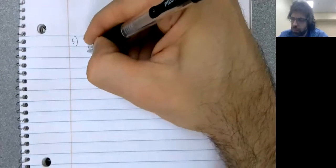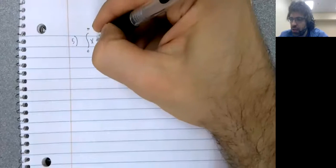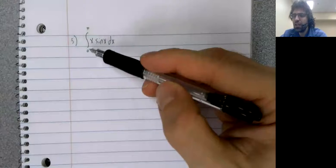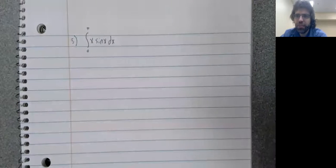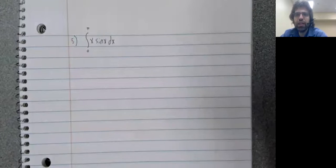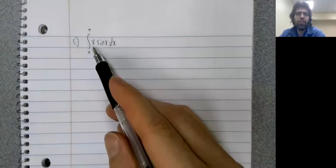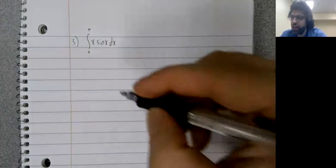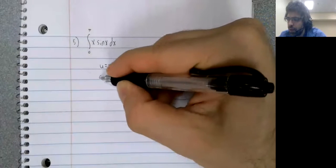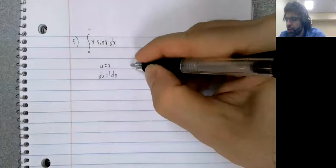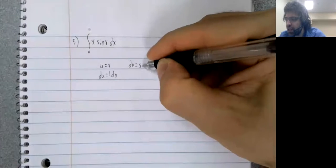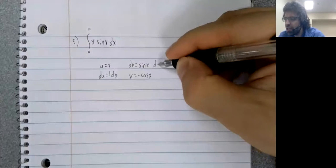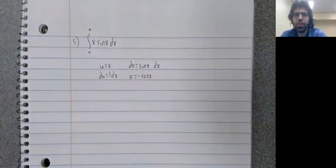So five's a definite integral, but aside from the fact that we have limits of integration, what this really looks like is integration by parts. X simplifies when you take its derivative. If the sine of X has a simple antiderivative, what we should probably do. There are never guarantees. I've said that many times, but I would wager that this antiderivative is going to be taken using parts.